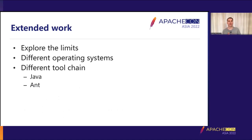As an extension of that, we wanted to explore the limits of what we could do. That was looking at what was the impact of using different operating systems, and what's the impact of different versions in the toolchain — primarily different versions of Java or different versions of Ant.